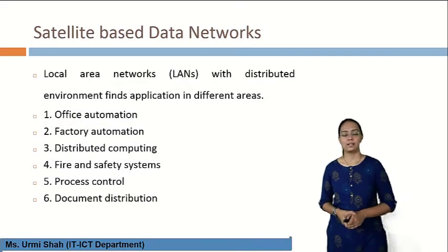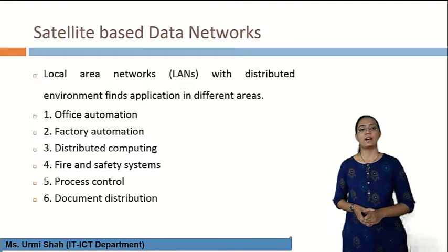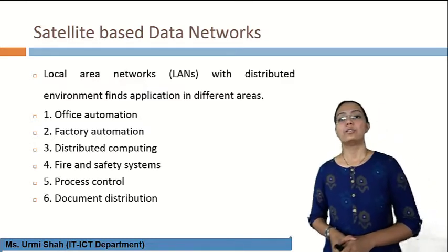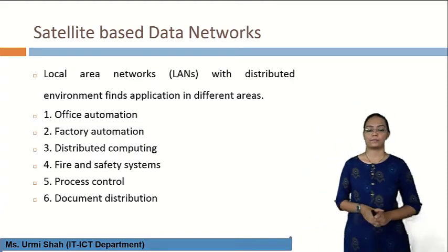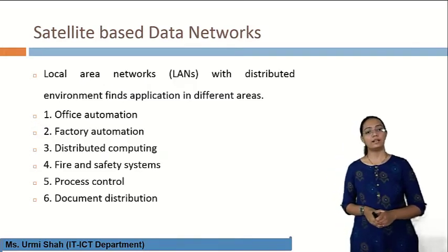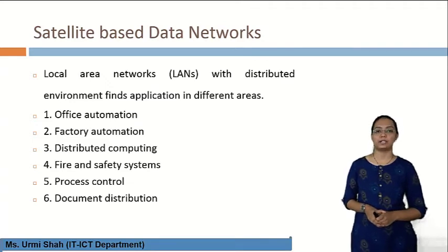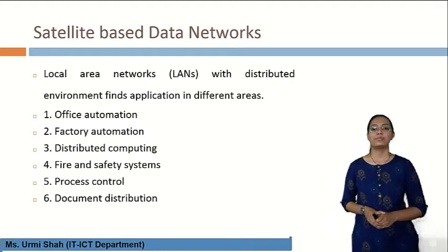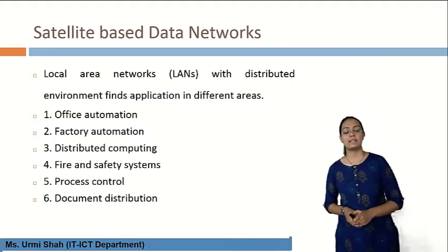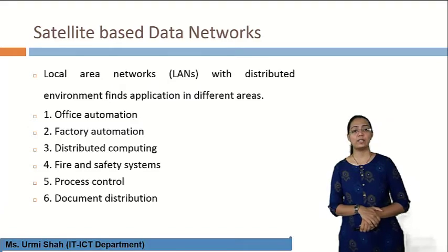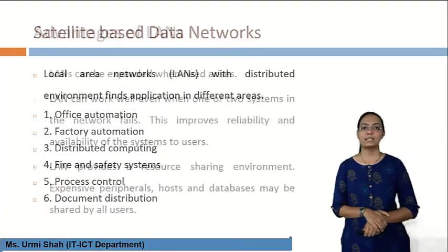Local area networks are distributed environments with applications in different areas. The first application is office automation. The second is factory automation. The third is distributed computing. The fourth is fire and safety systems. The fifth is process control. And the sixth is document distribution. These are the six applications in the area of local area networks.